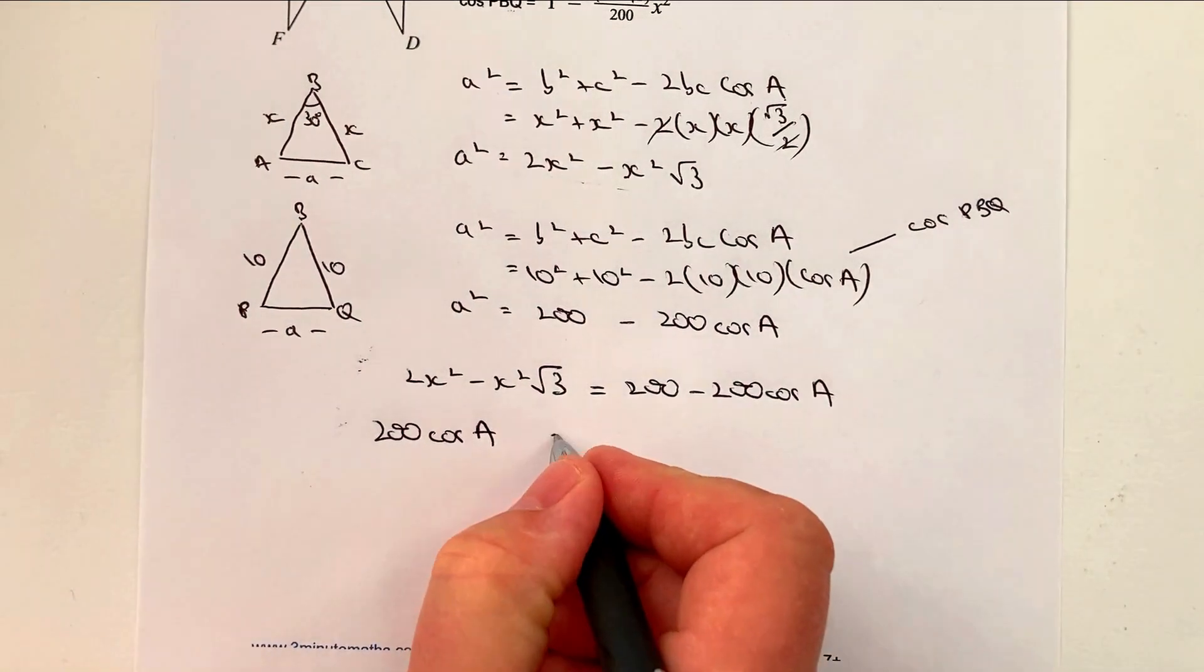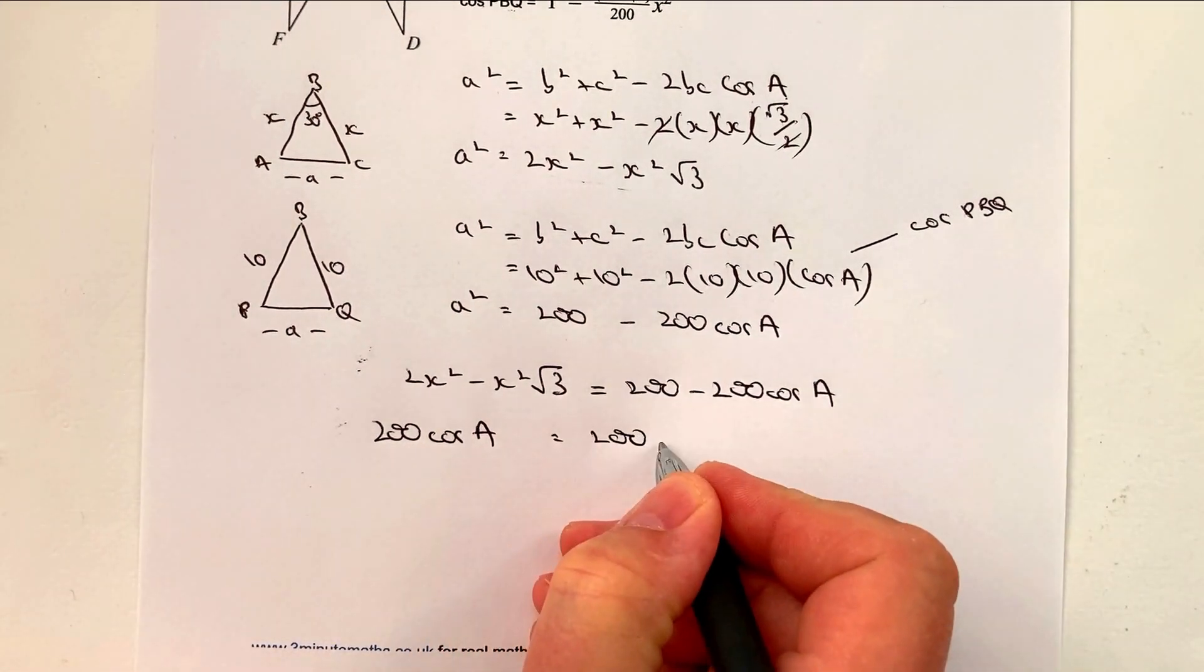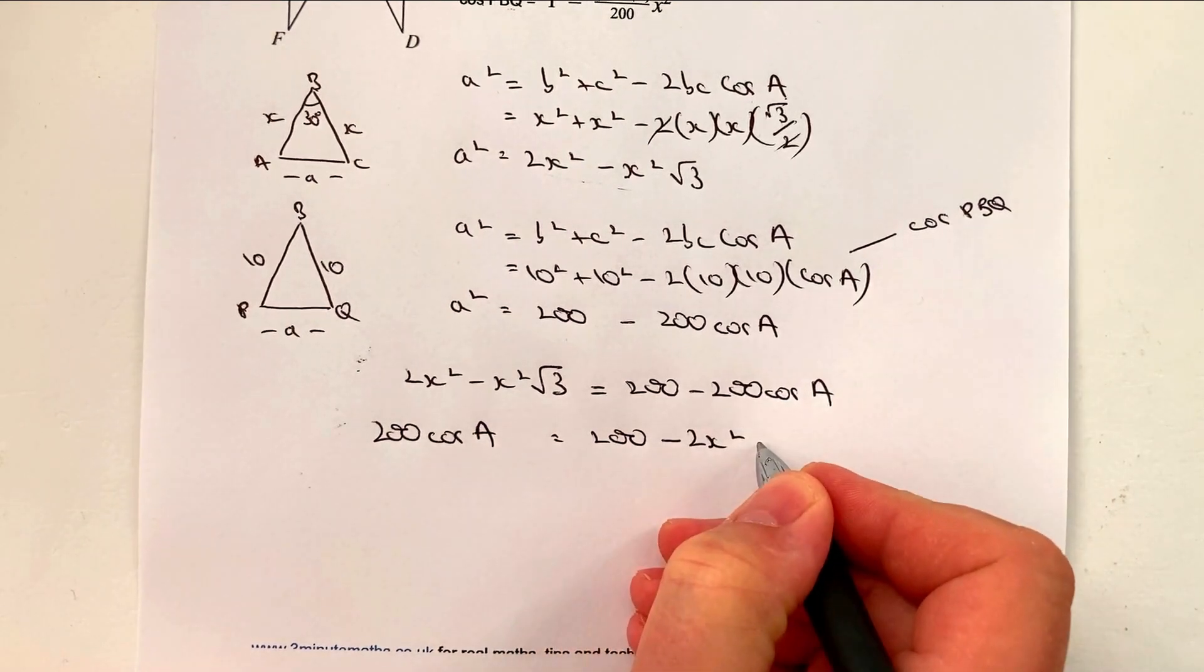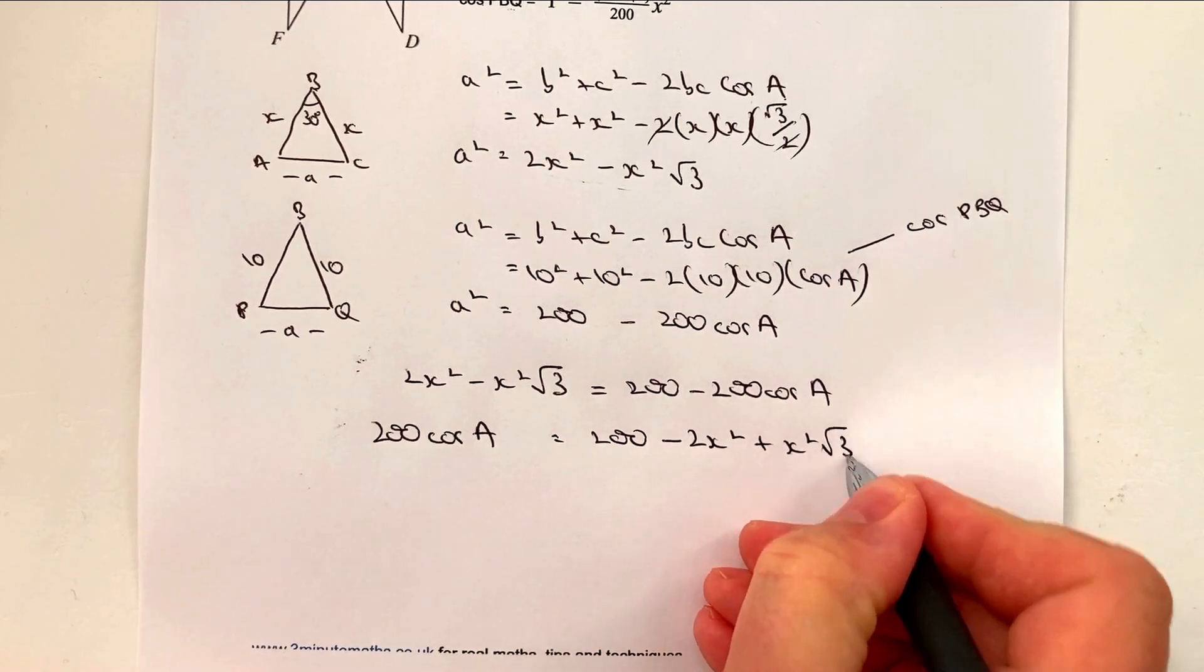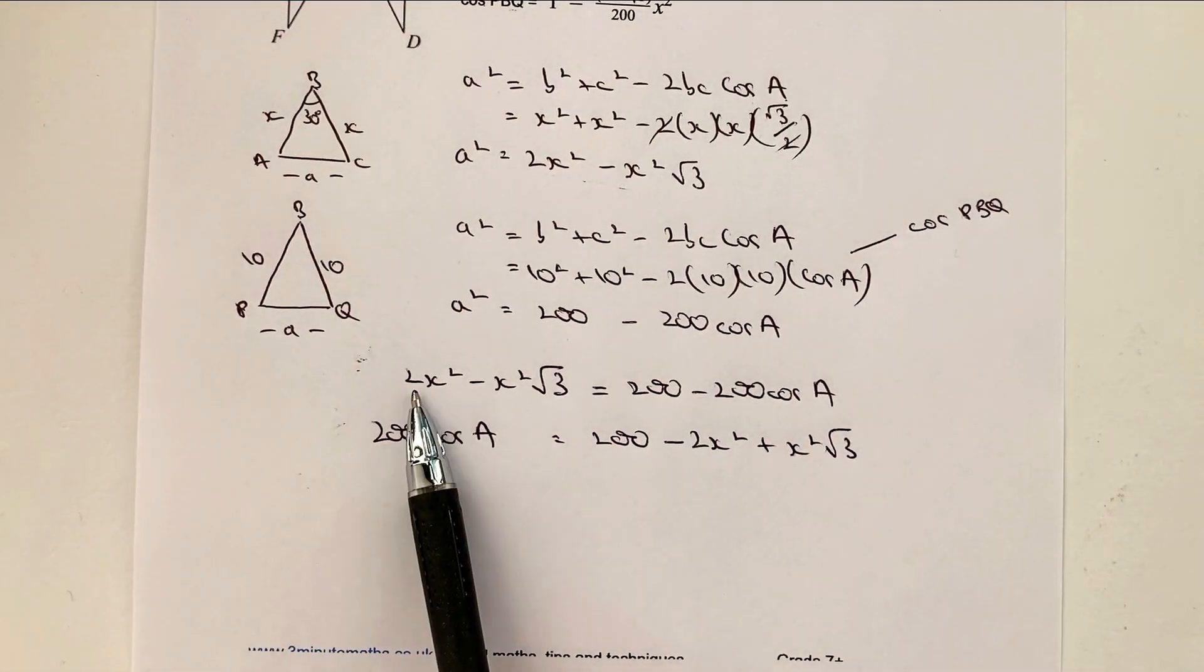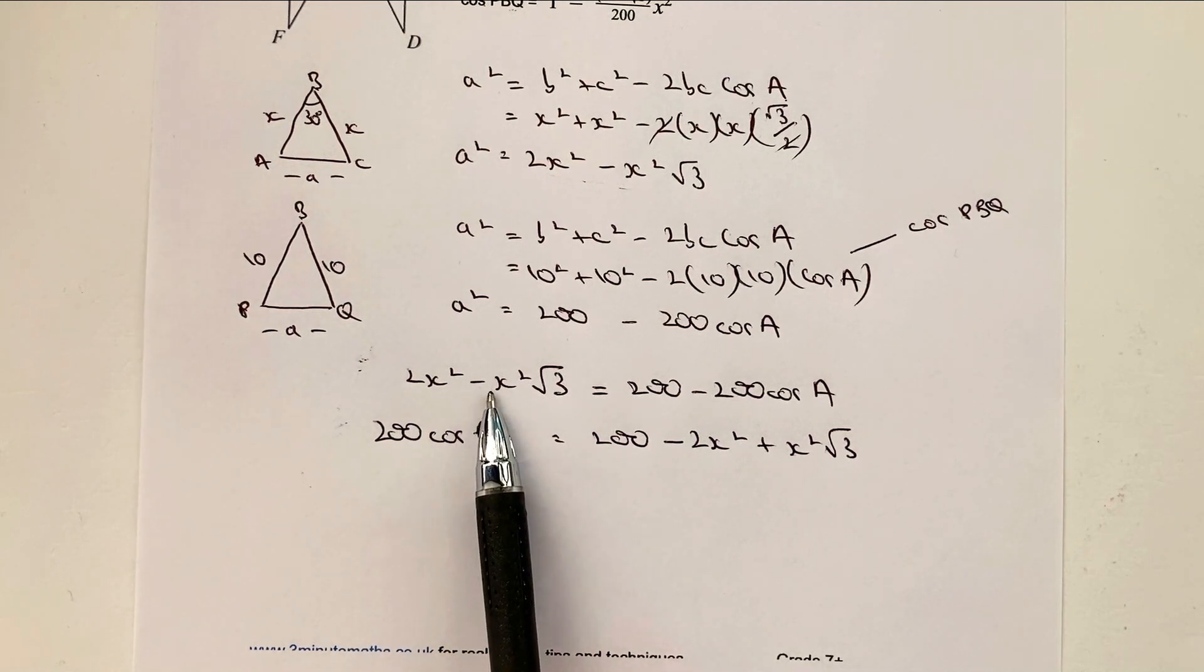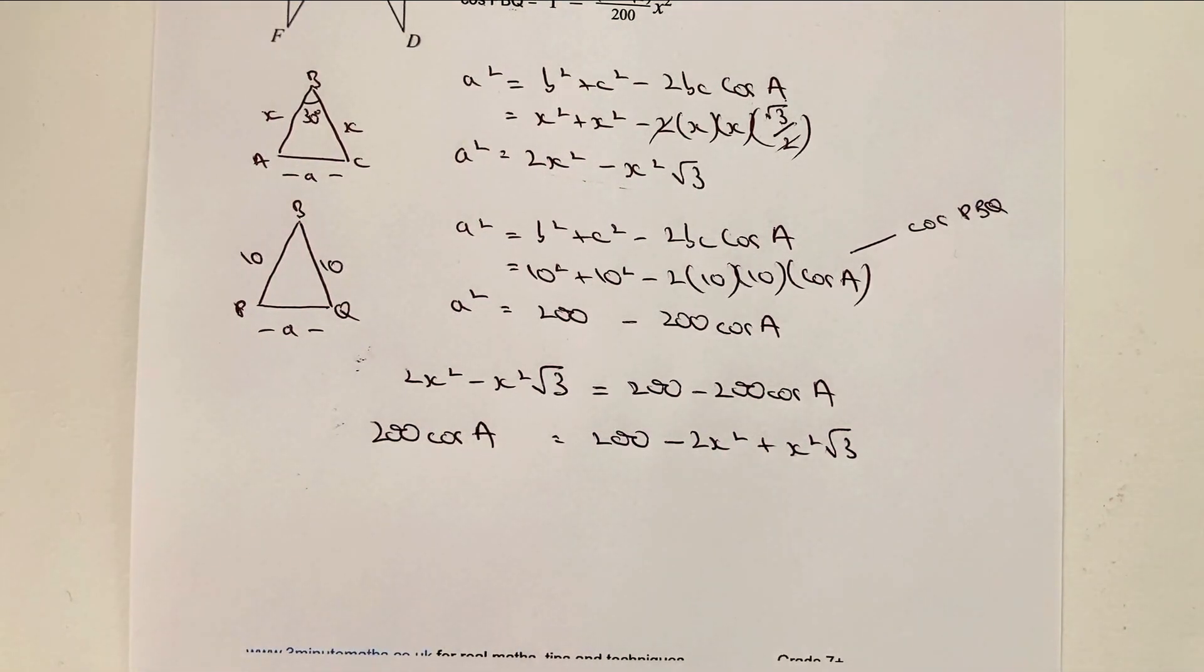So what I'm going to get is going to equal to 200, and it's going to be minus 2x squared and then plus x squared root 3. So what I've done here is I've minus 2x squared from both sides, and I've added x squared root 3 to both sides.